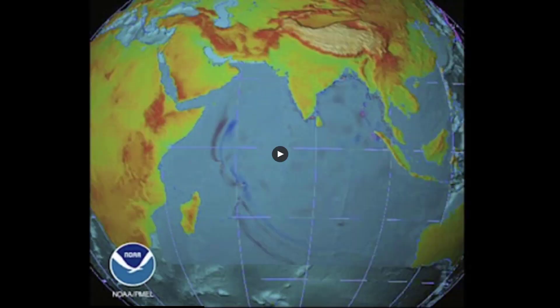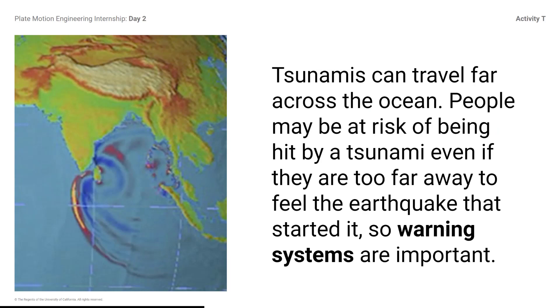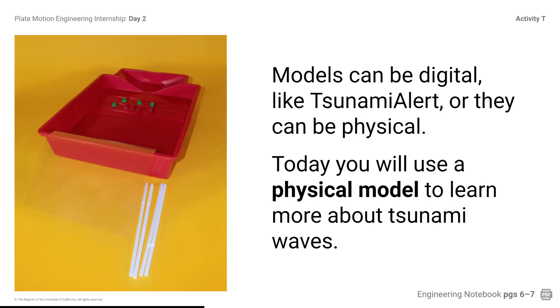Students, play the video. Note the secondary peaks of the wave after the first peak hits the shore. What did you observe as you watched the video? Tsunamis can travel far across the ocean. People may be at risk of being hit by a tsunami even if they are too far away to feel the earthquake that started it, so warning systems are important. Models can be digital, like a tsunami alert, or they can be physical. Today, you will use a physical model to learn more about tsunami waves.